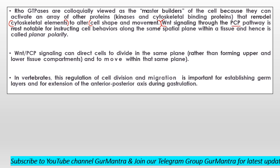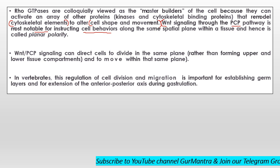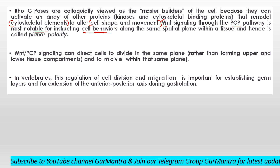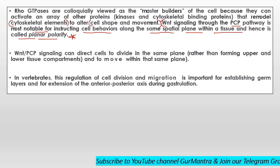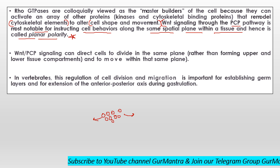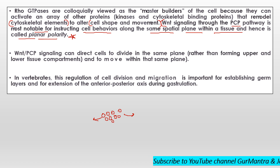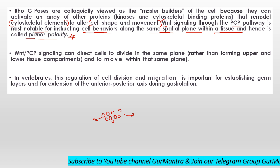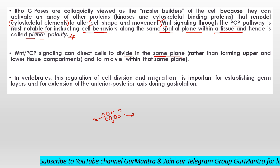WNT signaling through the PCP pathway is most notable when we are instructing cells about their behavior — where to move, where not to move — along the same spatial plane within a tissue, and hence it is called planar polarity. This is a very important point; that is where the name comes from. If we are talking about cell migration in a plane, movement happens horizontally — there is no upper-lower concept. That is why we also call it the planar polarity pathway. WNT and PCP signaling directs cells to divide and move in the same plane, not in upper-lower compartments.